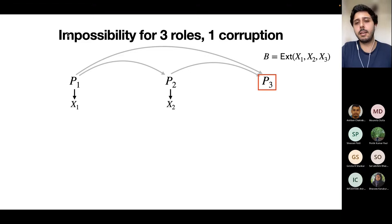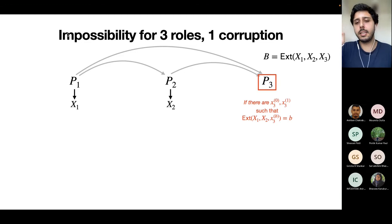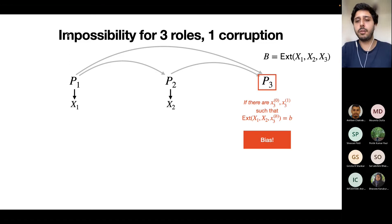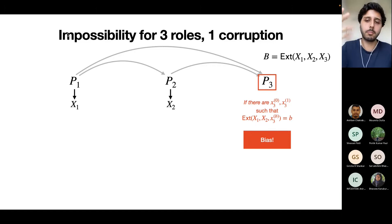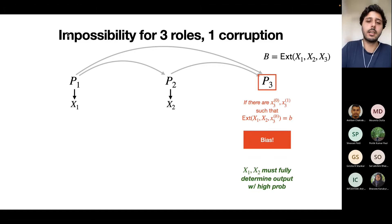Looking at P3 first: if there exist two values X3_0 and X3_1 such that plugging them into the extractor with specific X1 and X2 gives 0 or 1, you can bias the coin by choosing which to broadcast. So for this strategy not to work, it must be the case that with high probability X1 and X2 fully determine the coin.